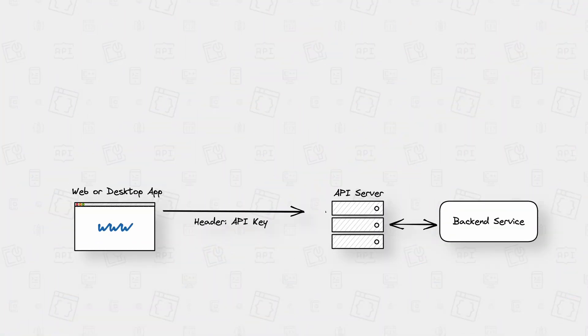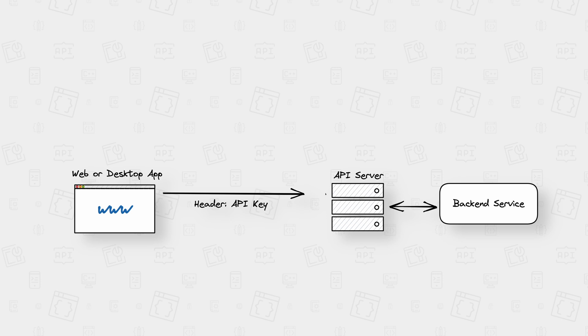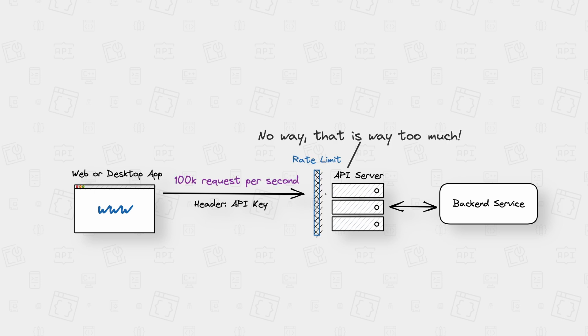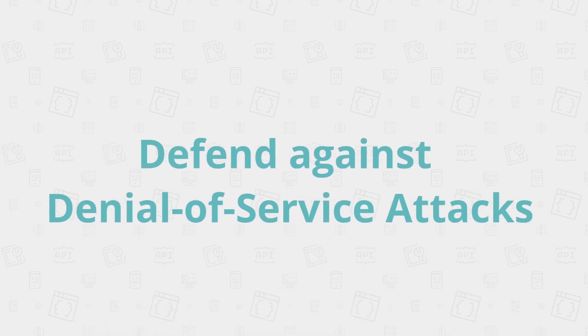For example, the API provider can set a rate limit that restricts the number of requests per minute allowed per individual client. Thereby, API keys help to establish a first line of defense against attempted denial of service attacks.